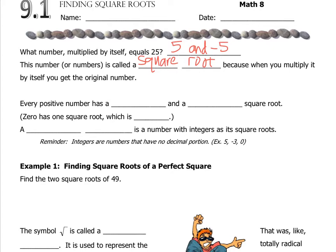Not all numbers have two square roots. Only positive numbers have two square roots. Technically, you can't take the square root of a negative, but that's for a different conversation. Zero only has one square root, which is zero, because there's no such thing as negative zero.